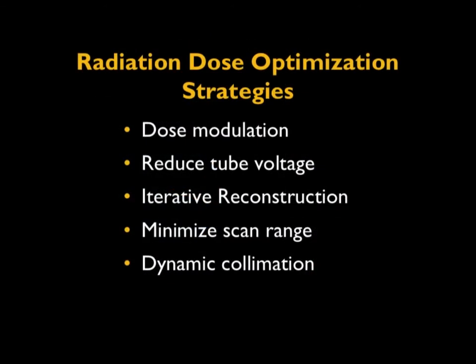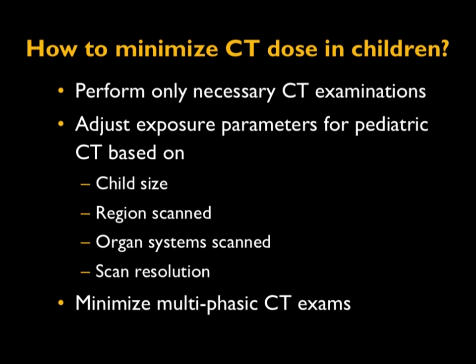There are a number of radiation dose optimization strategies, including dose modulation, reduced tube voltage, use of iterative reconstruction, minimizing the scanned region, and using scanners with dynamic collimators. The overarching principle is to perform only necessary CT examinations, and to adjust exposure parameters for pediatric CT based on child size, the region scanned, the organ system scanned, and the type of scan resolution needed. It is also important to minimize multi-phase CT exams and perform them only when absolutely necessary.